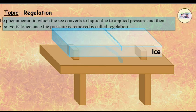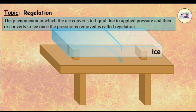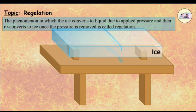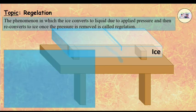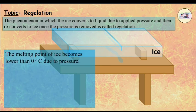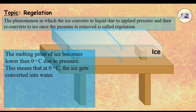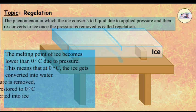The phenomenon in which the ice converts into liquid due to applied pressure and then reconverts to ice once the pressure is removed is called regelation. The melting point of ice becomes lower than 0 degrees Celsius due to pressure. This means that at 0 degrees Celsius, the ice gets converted into water.